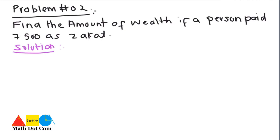Now let's have one more example. Here, you have to find the amount of wealth if a person paid 7,500 as zakat. It means the person has paid 2.5% of his original wealth, and that 2.5% equals 7,500. Let's find it out by the unitary method.